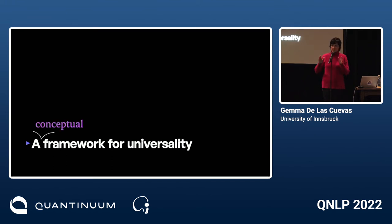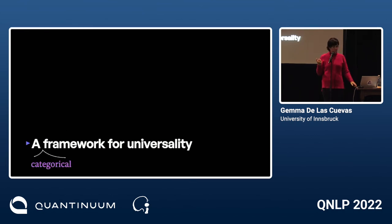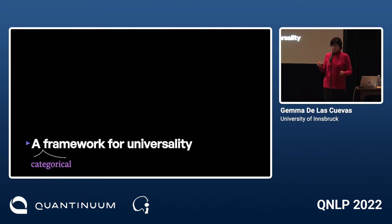I believe we need to do this in two ways. One is conceptually, so we can connect to more philosophical texts, to linguists, and to less formal notions of universality. The other is formal — in particular, we've chosen the framework of category theory.